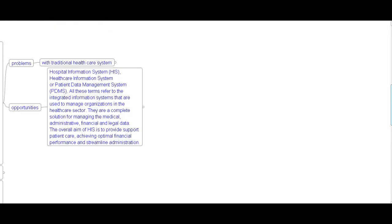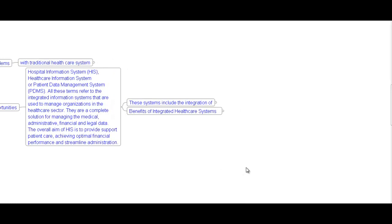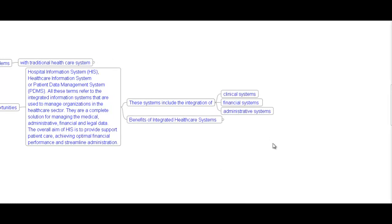Now let's see the opportunities. Hospital Information System (HIS) or Patient Data Management System (PDMS) — all these terms refer to integrated information systems used to manage organizations in the healthcare sector. They are complete solutions for managing medical, administrative, financial, and legal data. The overall aim of HIS is to provide support for patient care, achieve optimal financial performance, and streamline administration. The system includes integration of clinical systems, financial systems, and administrative systems.